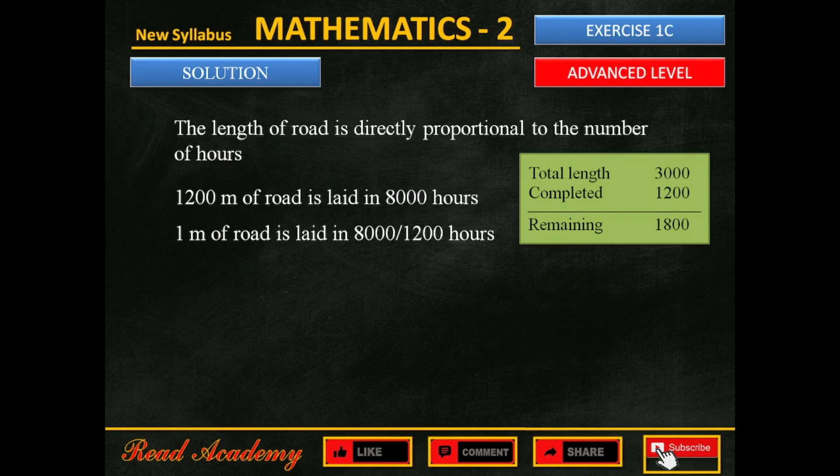To find the number of hours needed to complete 1,800 meters of the road, we are going to multiply 1,800 by this number. 1,800 meters of road is laid in 8,000 by 1,200, 1,800 multiplied by 1,800, which equals 12,000 hours. So, the required number of hours are 12,000.